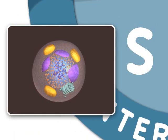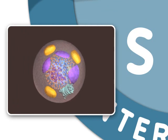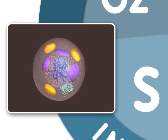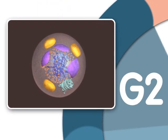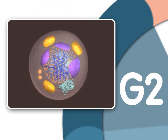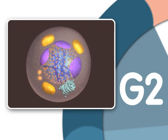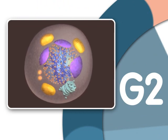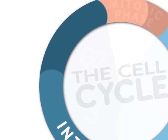Next is the S, or synthesis phase. This is an important stage because it is during the S phase that DNA in the nucleus is replicated. The cell next enters another growth stage called G2, or Gap 2. It is during G2 that the cell finishes growing. Once the cell has duplicated DNA in the nucleus and two centrosomes have appeared in the cytoplasm, mitosis can begin.